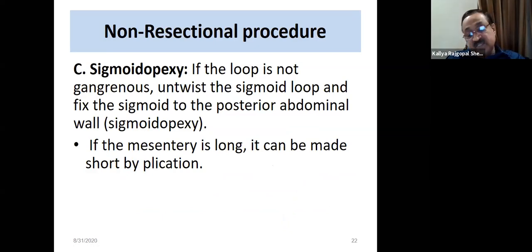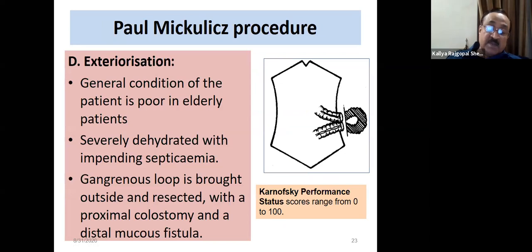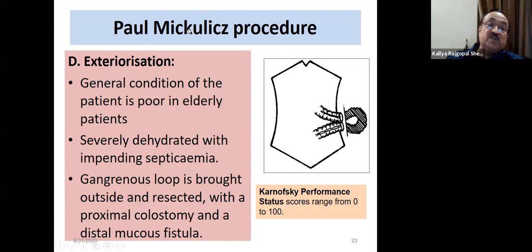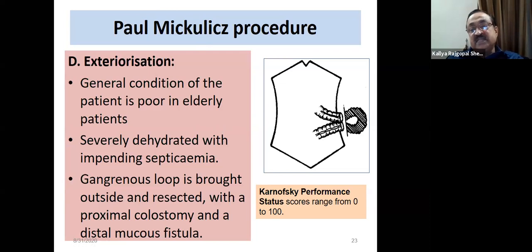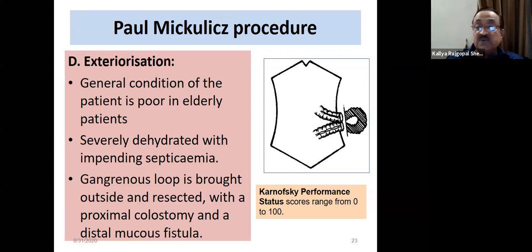For very sick patients — poor general condition, dehydration, sepsis, gangrene — the Paul-Mikulicz procedure was historically described: bringing both loops out and performing resection later. Today, resection is the minimum recommended. The Karnofsky scoring system helps — a score of 100 is normal; scores of 20–40 indicate very poor condition where alternative options must be considered.